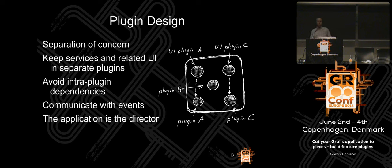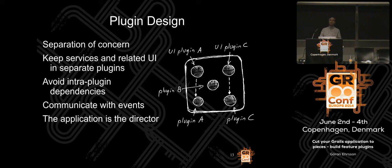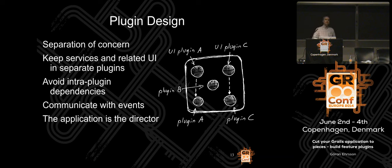When designing plugins in Grails, the most important part is separation of concerns. Each plugin should focus on its specific domain. For example, the address book — where you keep companies, contacts, and relationships — is in one plugin called CRM Contact. That plugin focuses only on management of companies, contacts, and the relationships between them.